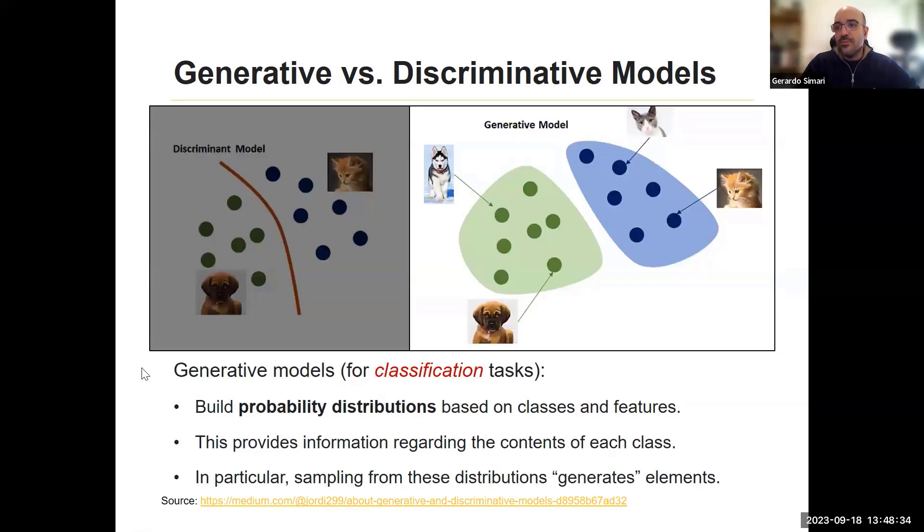Generative models, again for classification, build probability distributions based on the classes and features. So in comparison to discriminative models, they do provide information regarding the contents of each class. In particular, what's interesting is this capability here. Once you have what was learned from the model, which is a probability distribution, you can sample from those probability distributions and thus generate elements. So that's where the name comes from.